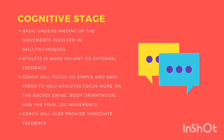The first stage is the cognitive stage. It is a stage where the learner is introduced to simple rules and instructions to have a basic understanding of the movements involved in certain skills or techniques. At this stage, the athlete is more reliant on external feedback to improve their proprioception and is not capable of self-correction abilities yet. Thus, it is crucial for the athlete to have a clear concept of the desired movement.